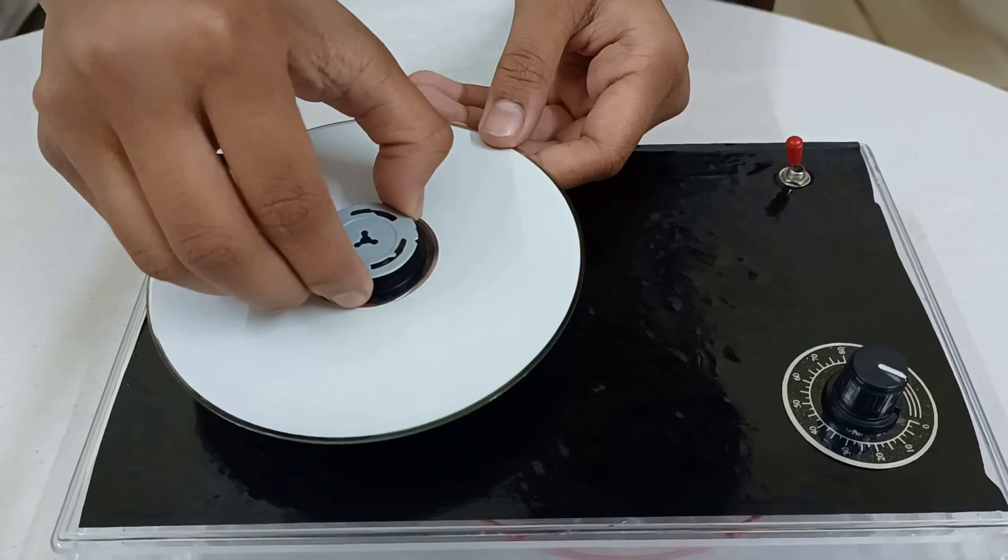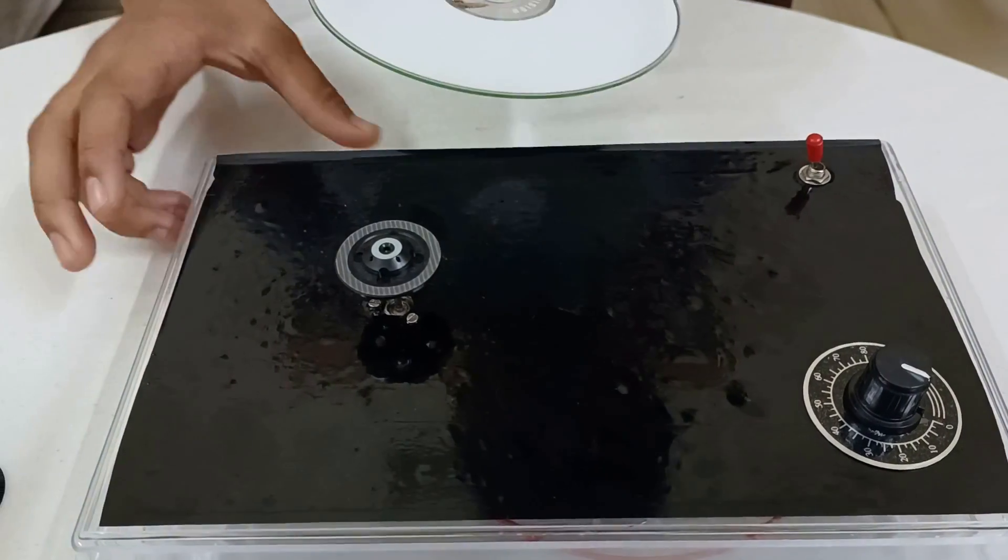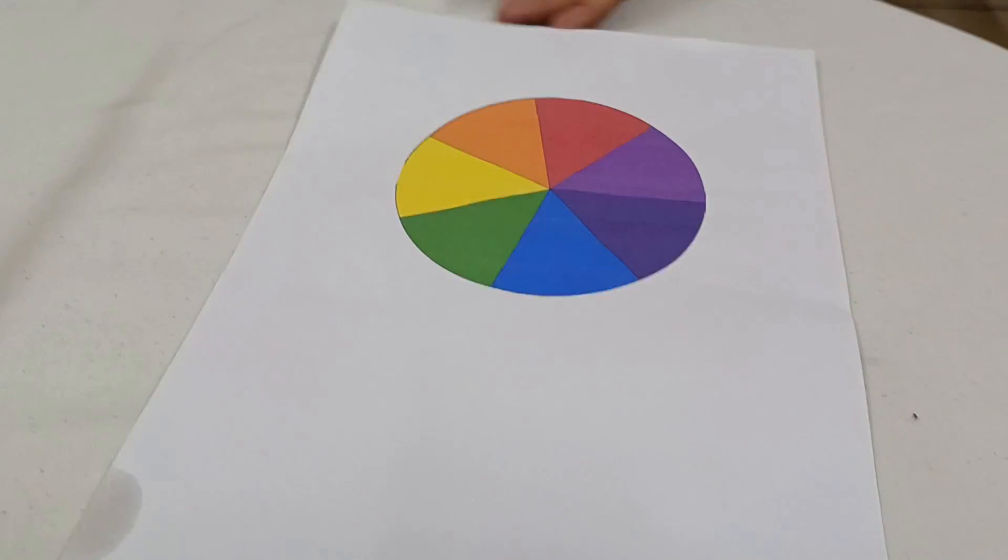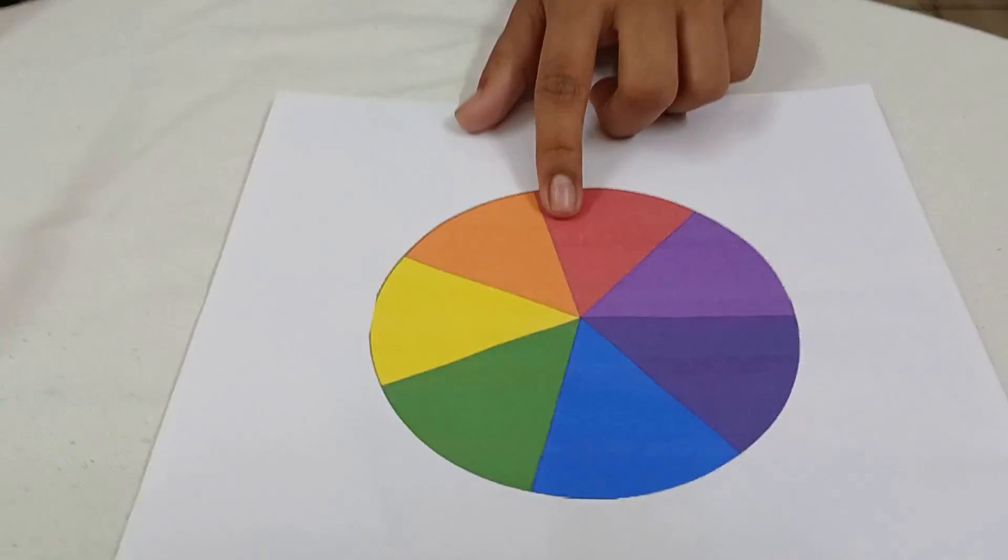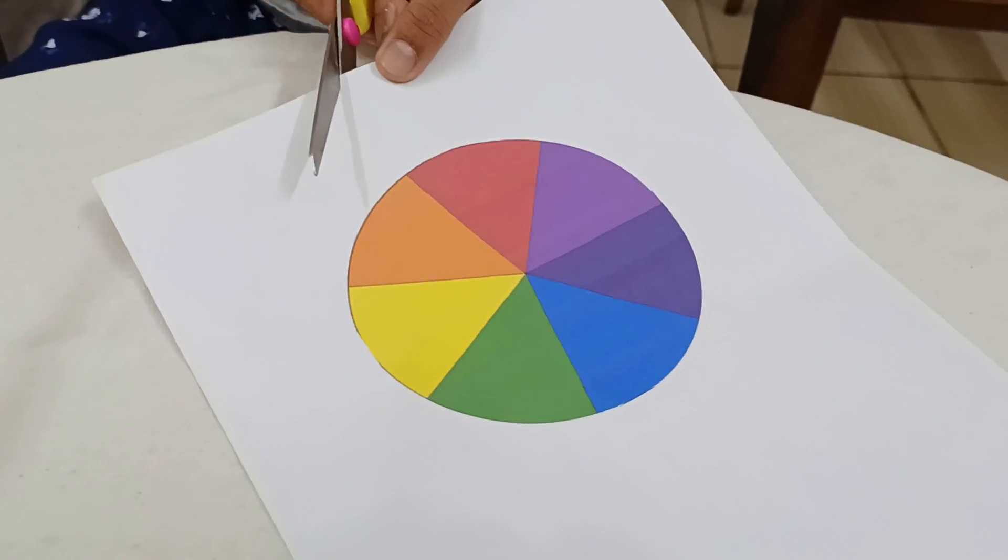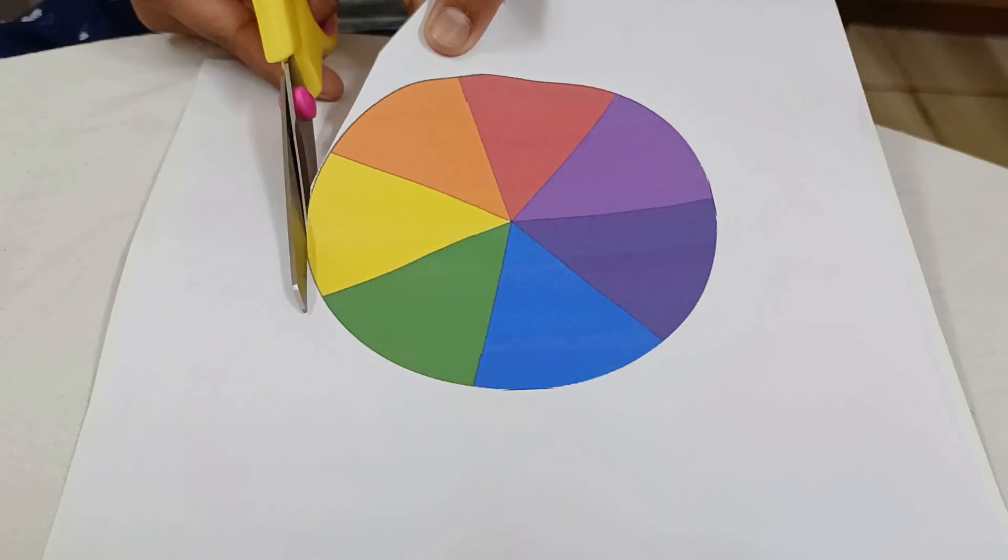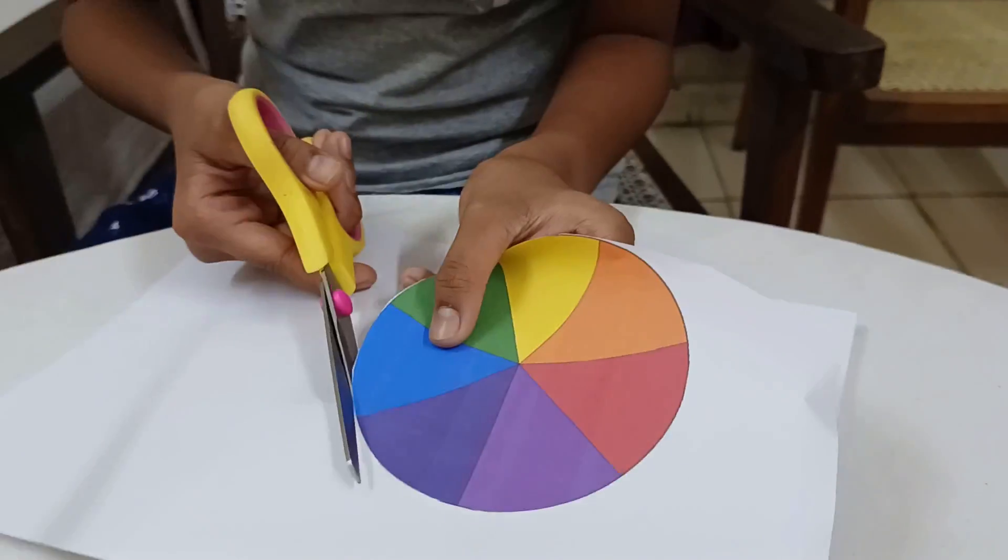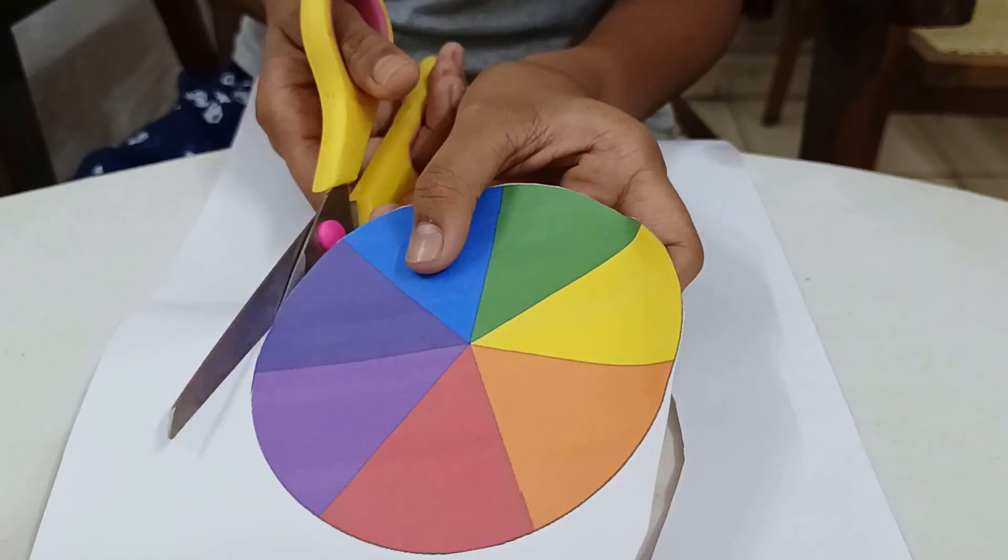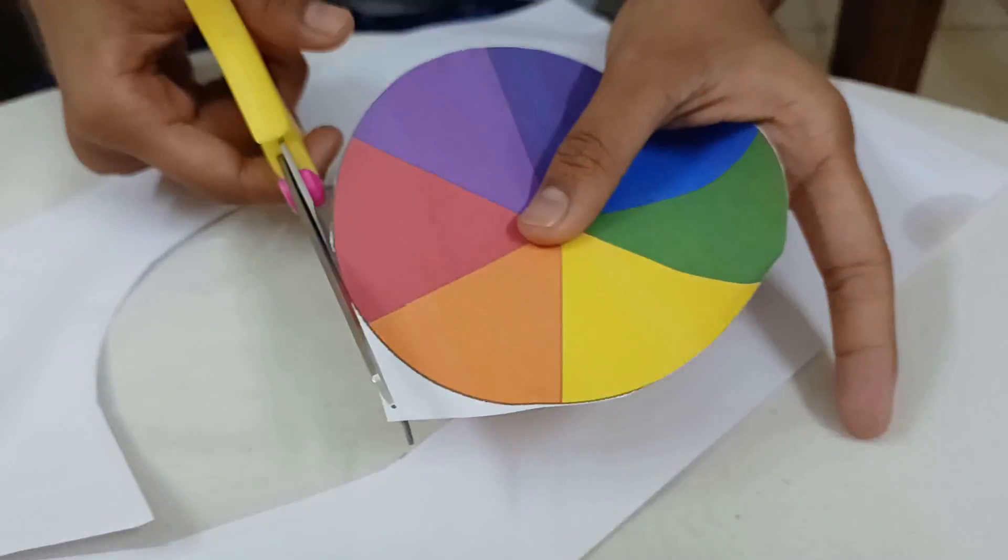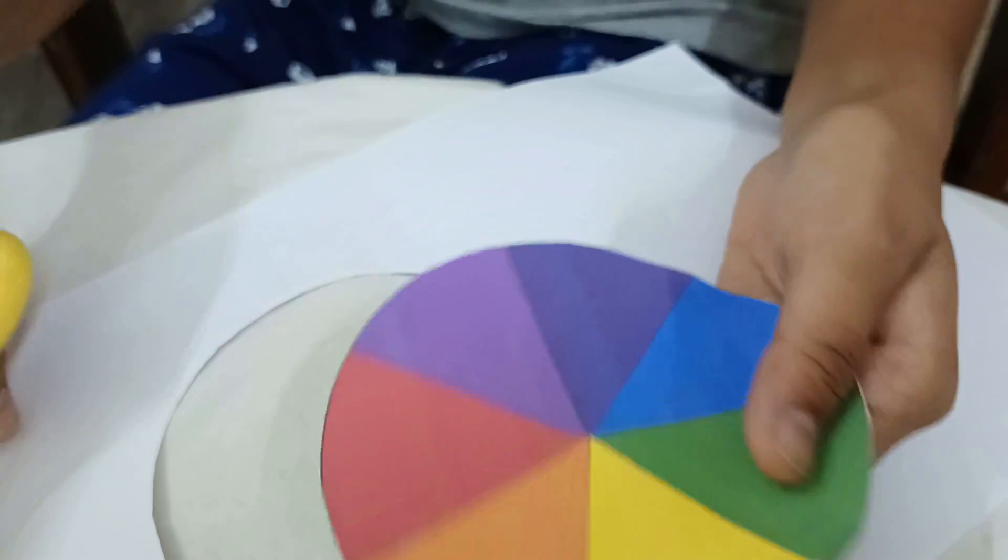Let me remove it and paste the Newton disc on the CD. Take the printout of Newton disc and cut it according to the size of CD, like this.